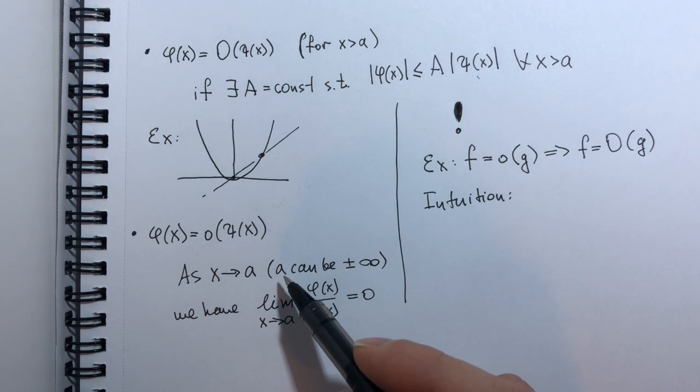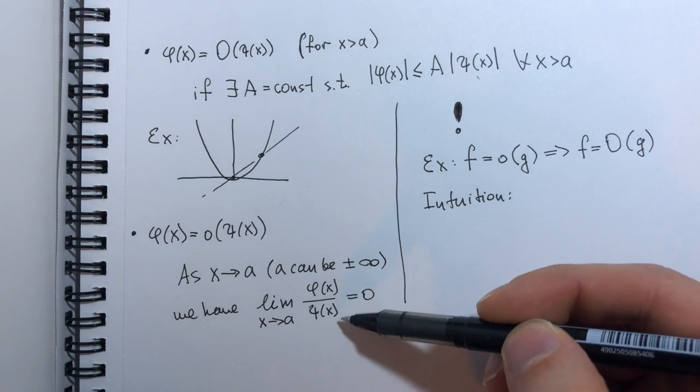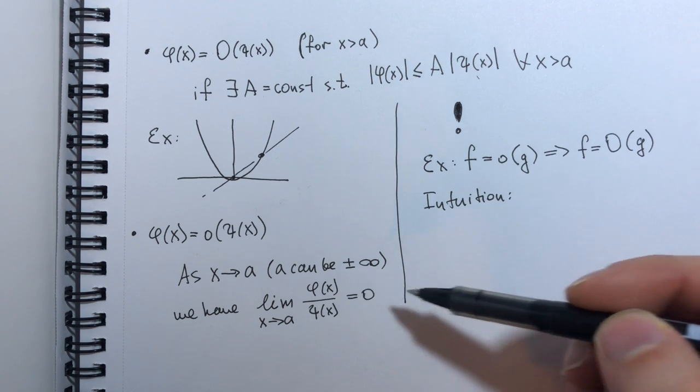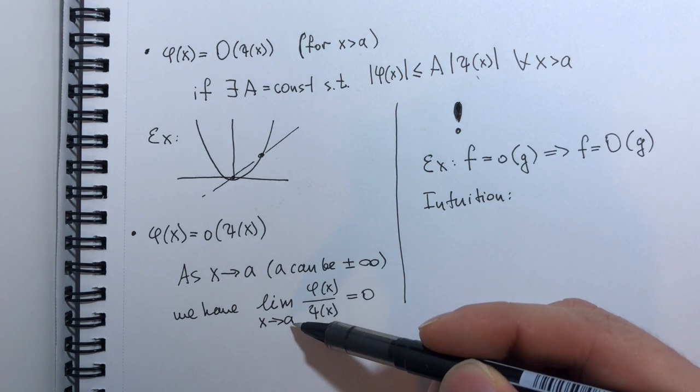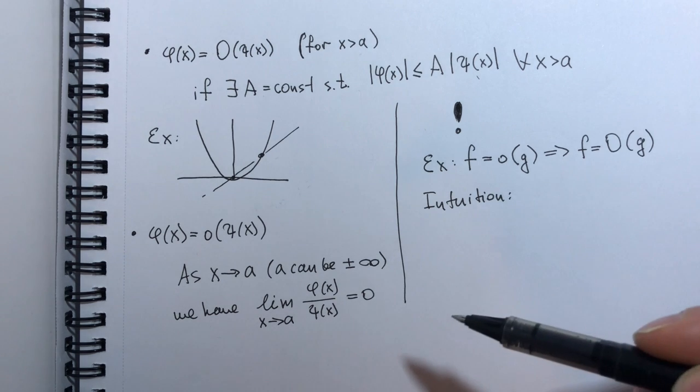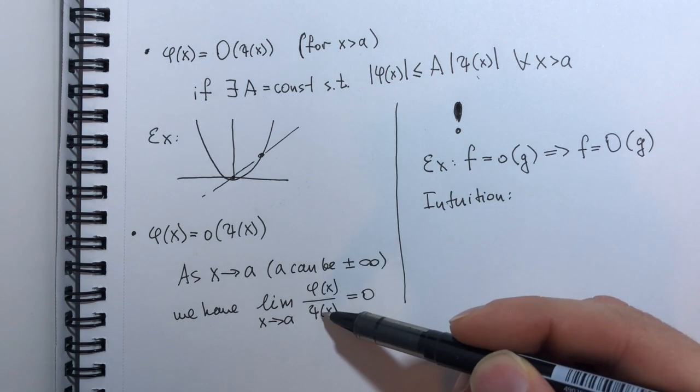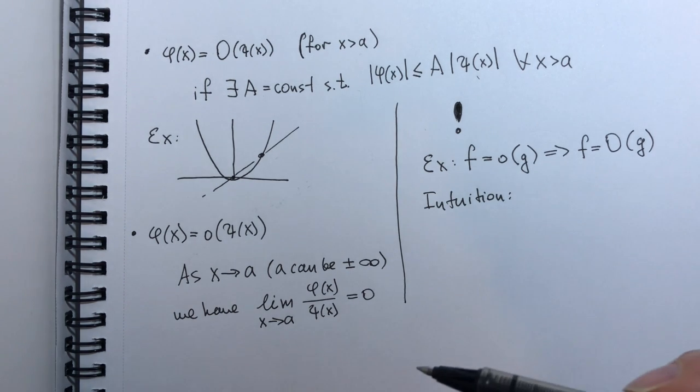Well in the case of small O, this limit tells us that as x tends to A, phi of x decreases faster than xi of x, thus giving us 0.